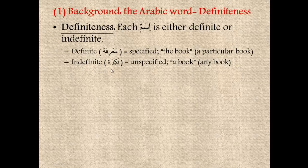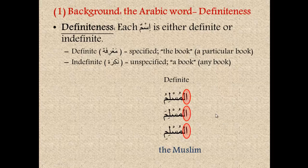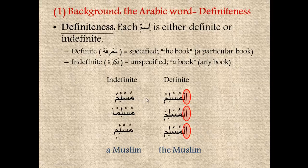On the other hand, if a noun is indefinite or nakirah, it is unspecified. When I say 'a book,' I'm talking about any book. Here we have three nouns, all of which are definite: al-muslimu, al-muslima, and al-muslimi. The case endings are different, but we're not going to worry about that for now. All three nouns mean 'the Muslim.' Notice how we have an alif-lam in front of the word — this alif-lam is what makes the word definite. We can convert all of these to their indefinite forms by dropping the alif-lam and adding a tanwin, so al-muslimu becomes muslimun, al-muslima becomes musliman, and al-muslimi becomes muslimin, meaning 'a Muslim' or 'any Muslim.'